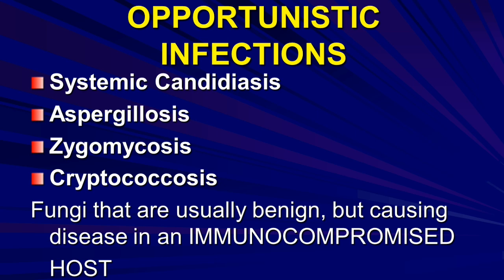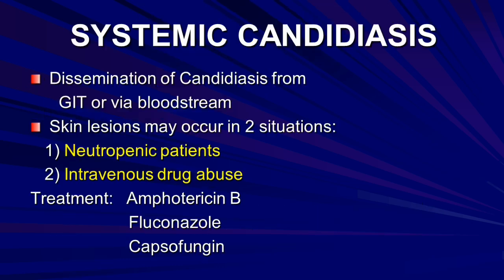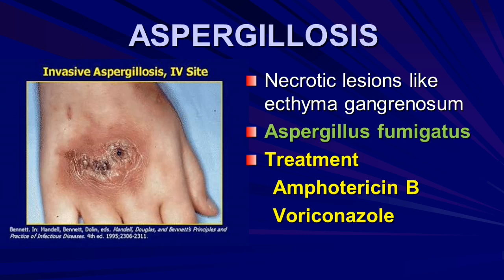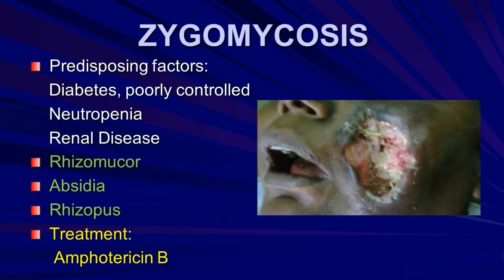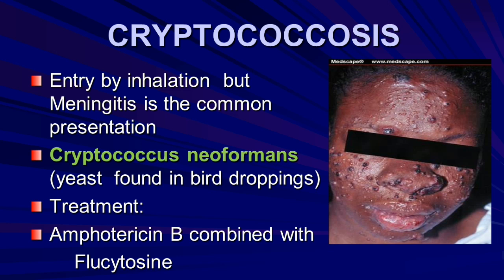Immunocompromised fungal infections include systemic candidiasis, aspergillosis, mucormycosis, and cryptococcosis. Aspergillosis: invasive Aspergillus flamingitis at IV sites; treatment is amphotericin B and voriconazole. Mucormycosis predisposing factors: poorly controlled diabetes, neutropenia, renal disease; treatment is amphotericin B. Cryptococcus neoformans found in pigeon droppings, causing meningitis by inhalation; treatment is amphotericin B combined with flucytosine.